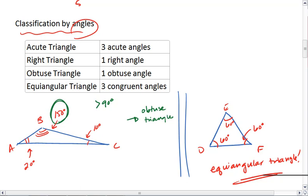And do take a quick moment to notice that if a triangle is equiangular, it can also be classified as an acute triangle. But we like equiangular when it's possible because it's more specific.